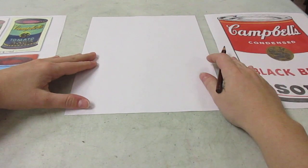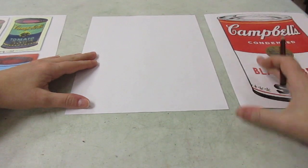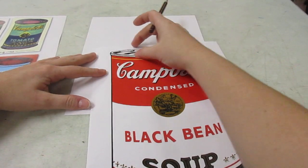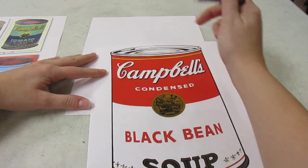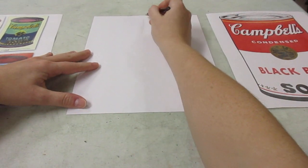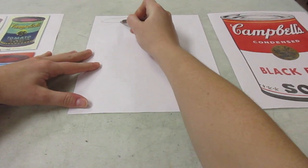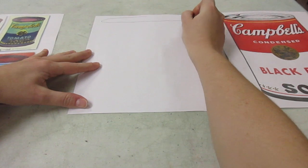So first step is we're gonna make the big oval on top, okay? So you can see it's a very skinny oval and it makes the top of the can. So way at the top of your paper, make a skinny oval.